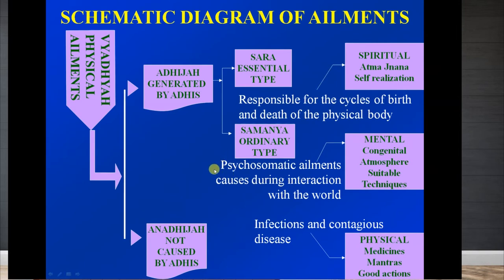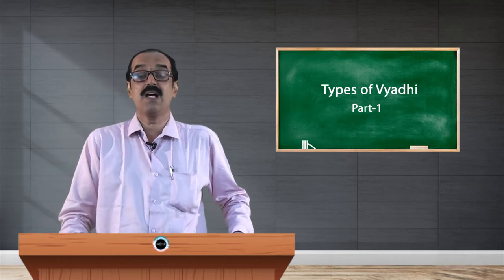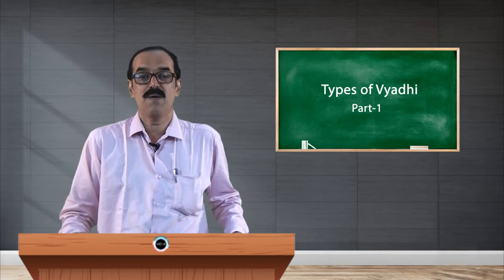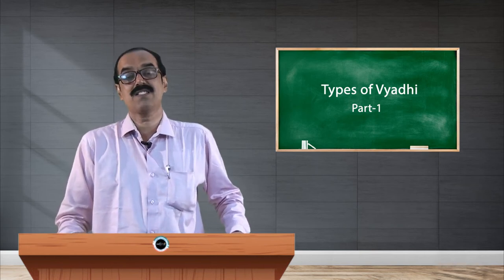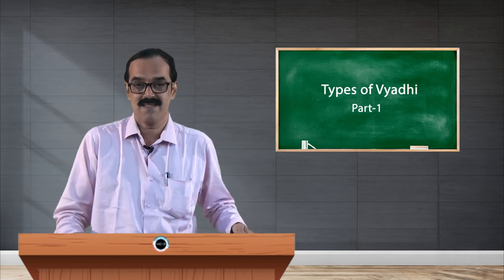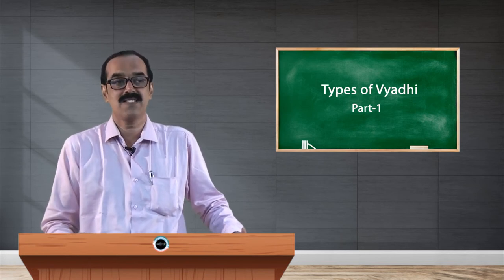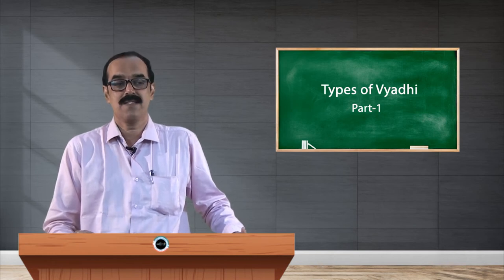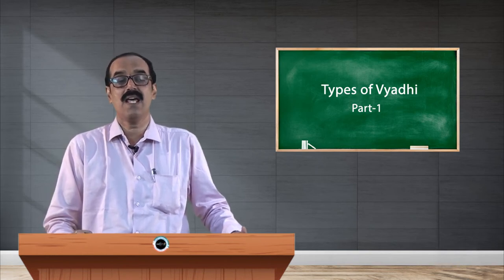These concepts originate from the Yoga Vasishta, where there is a dialogue between Rama and Vasishta — similar to the Bhagavad Gita dialogue between Krishna and Arjuna. Rama went to Vasishta's ashrama raising many questions, and Vasishta answered with profound kathas. Rama asked about the cause of disease, and Vasishta explained this concept: disease is of two types — adhi-java vyadhi and anadi-java vyadhi.